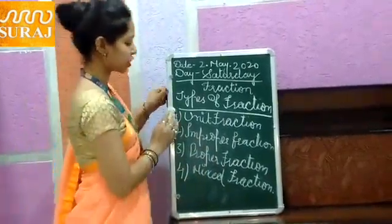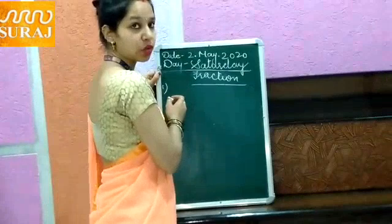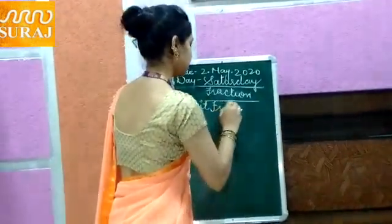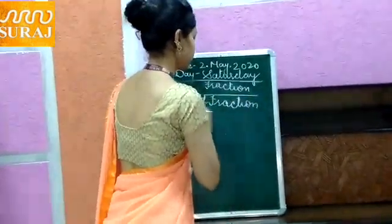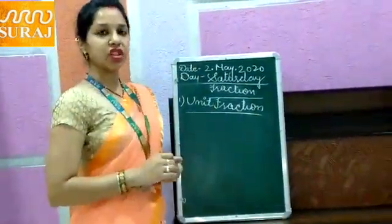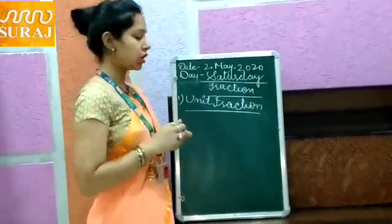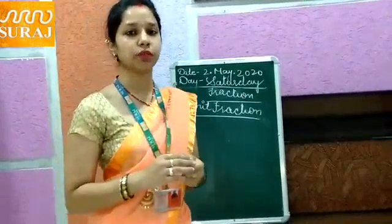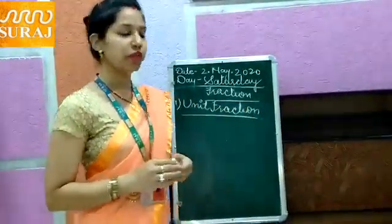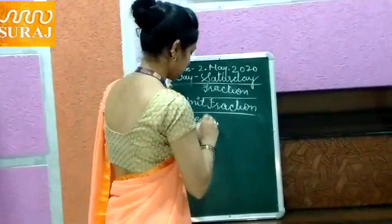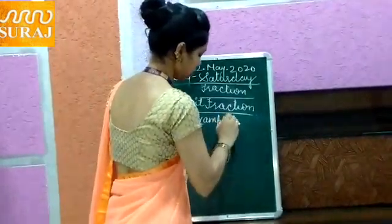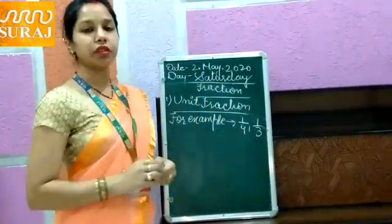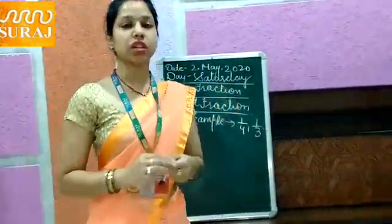Unit friction. I will discuss unit friction. Friction carrying the numerator digit one is known as unit friction. Kisi bhi fraction mein numerator one ka hona — usi unit friction bolte hai. For example, one upon four, one upon three. If there is numerator one, then we will decide that fraction is a unit friction.